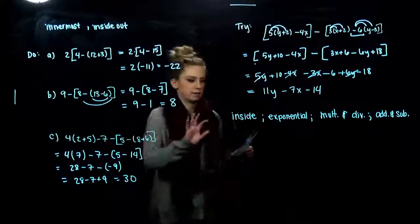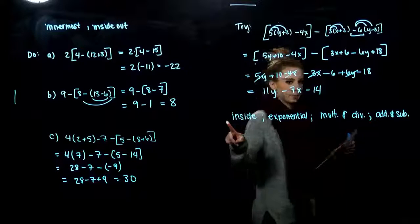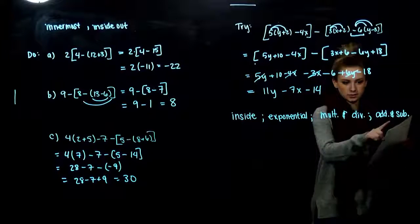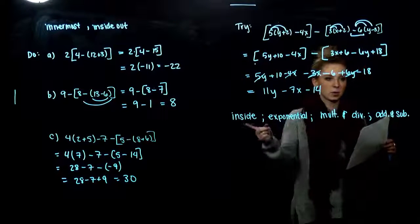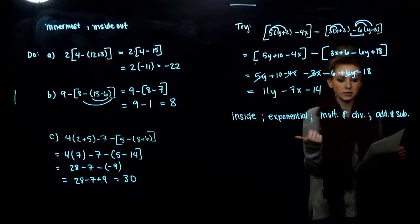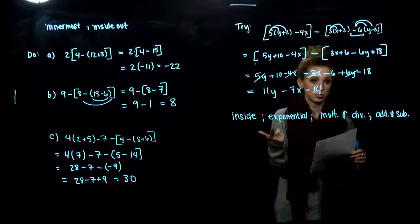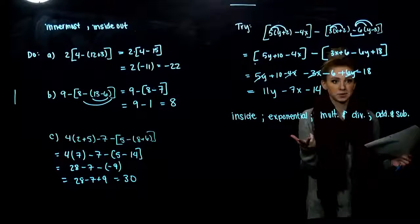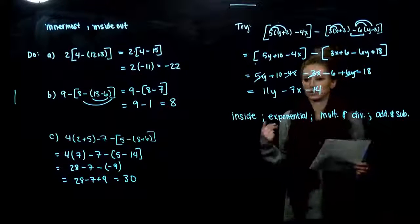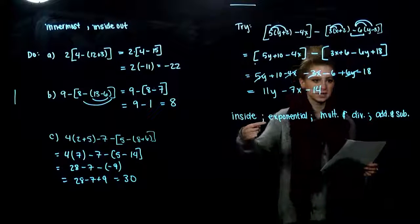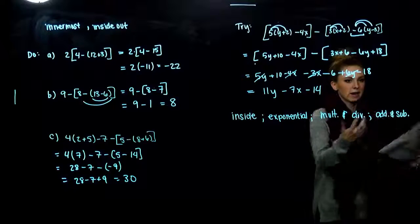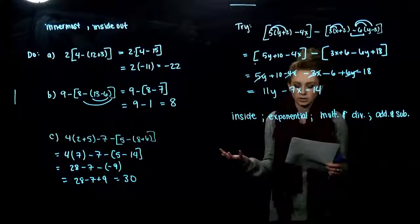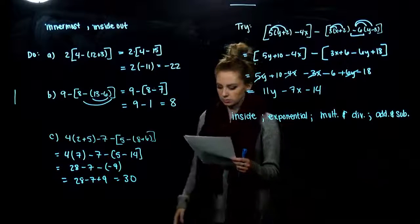So the cool part about the rules for operation. These are the same order. This is the same order that a computer goes in. A calculator when you input numbers. How we do it by hand. Everything in the world computes mathematics in the same exact order. That's how we end up with the same answers universally when we're working on a problem.